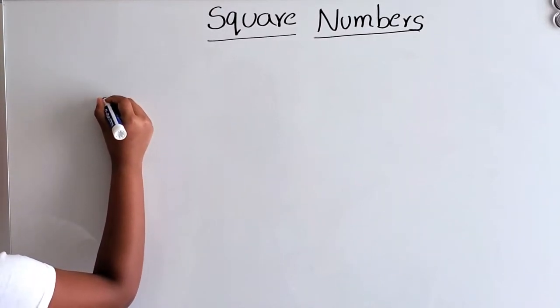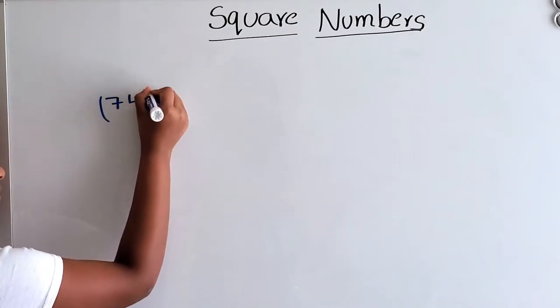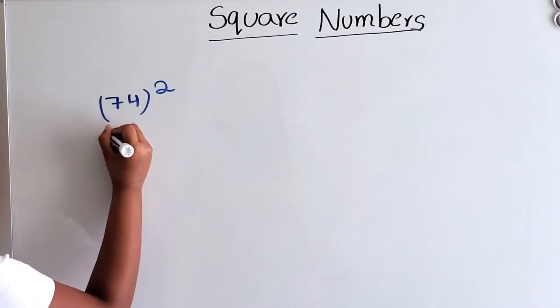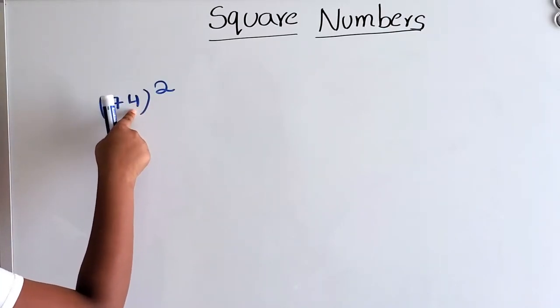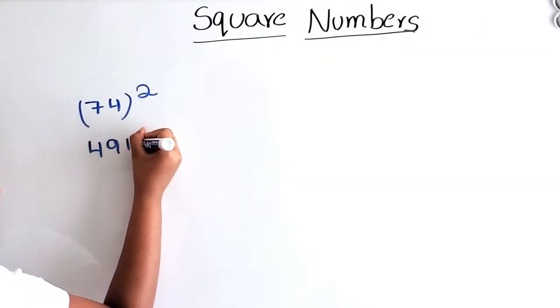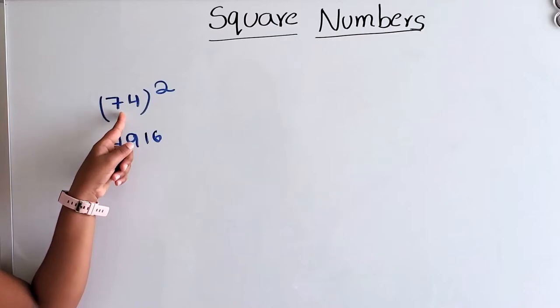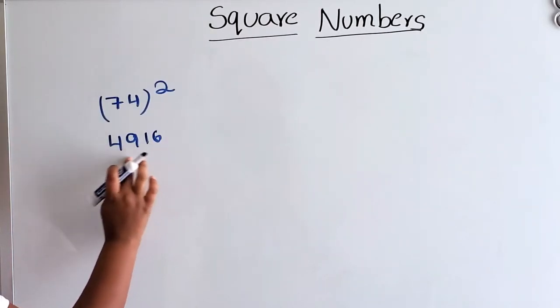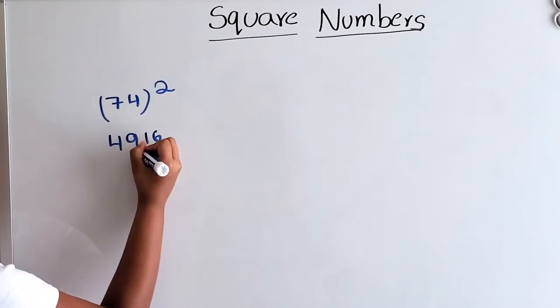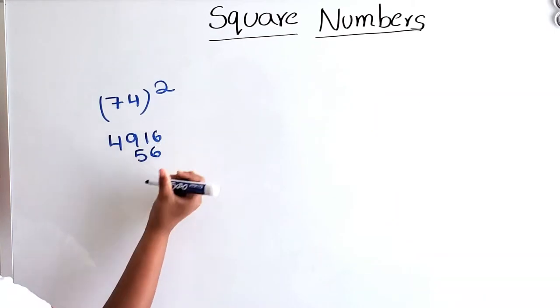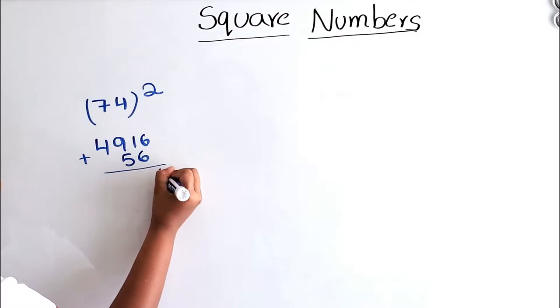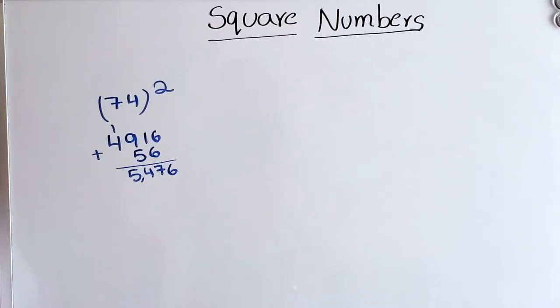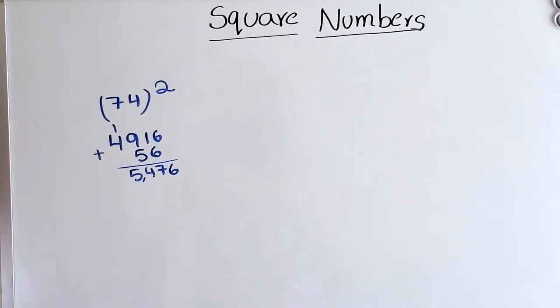First, let's take 74. What is the square of 7? 49. And what's the square of 4? 16. Now, let's multiply 7 times 4, which is 28. 28 times 2 is 56. Let's add it onto this number. Skip the first digit and line it between these two numbers. So, 56. And let's add: 6, 7, 1, and 5. So the square of 74 is 5,476.